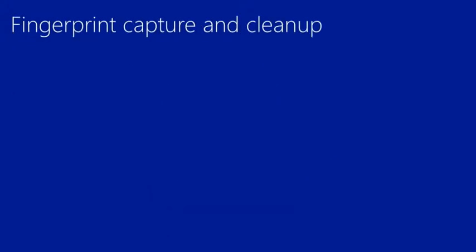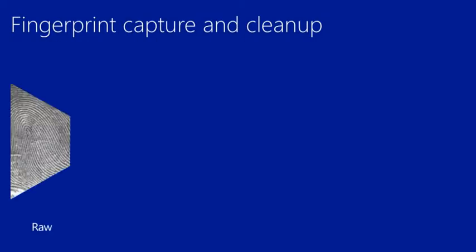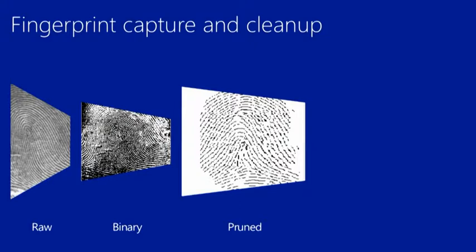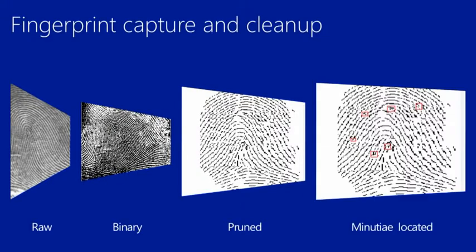A computing device processes fingerprints by starting with a raw image, typically a 3D image. It is converted into a binary format, from where the system removes extra information not relevant to identifying the user. It then identifies the minutia on the fingerprint to create a pattern — a unique representation of the finger.